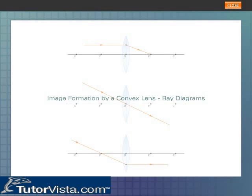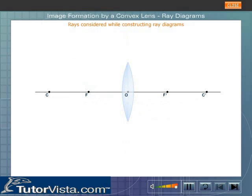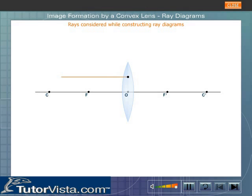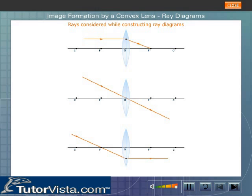Image formation by a convex lens — ray diagrams. Ray diagrams are usually used to show the formation of images by lenses. While constructing ray diagrams, generally two of the rays shown here are considered. A ray of light passing through the optical center of the lens travels straight without suffering any deviation. An incident ray parallel to the principal axis after refraction passes through the focus. An incident ray passing through the focus of a lens emerges parallel to the principal axis after refraction.